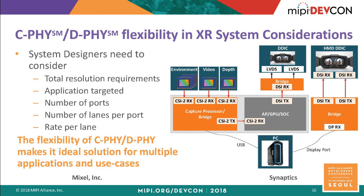Getting back to the system diagram: key system considerations for your XR system include your application's total resolution requirement, which boils down to the number of ports needed, lanes per port, and rate per port. Having a C-Fi/D-Fi combo provides flexibility to support multiple modes and multiple use cases — a significant benefit in such a system.